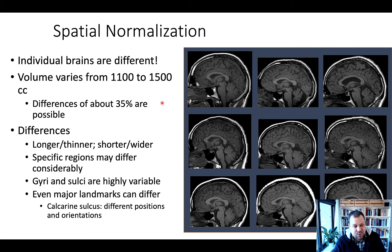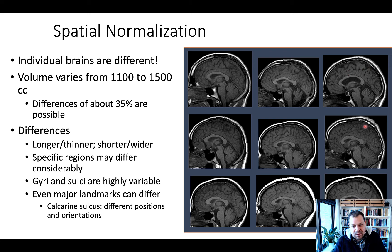Coming back to gross anatomy, the volume can vary from 1,100 to 1,500 cubic centimeters, so differences of almost 30% are possible within your sample. And then you have so many differences in brain shapes and sizes — brains can be longer, thinner, shorter, or wider. Specific regions may differ considerably, and there is high variability in gyri and sulci — for instance, here is a sulcus that doesn't exist anywhere else. The location of major landmarks can differ as well across brains.